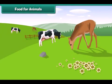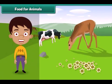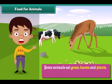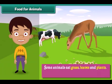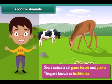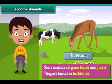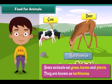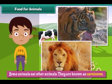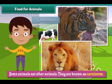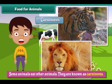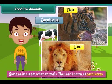Let us learn about what animals eat. Some animals eat grass, leaves and plants — they are known as herbivores. Examples of herbivores are cows, deer, etc. Some animals eat other animals — they are known as carnivores. Examples of carnivores are lions, tigers, etc.